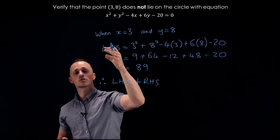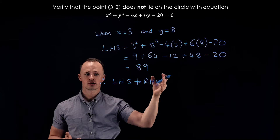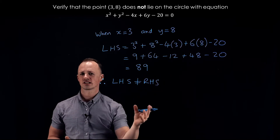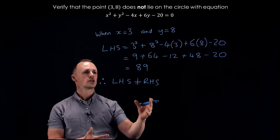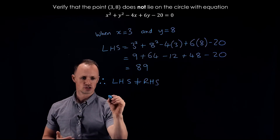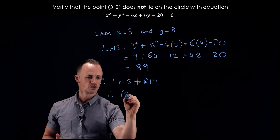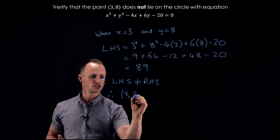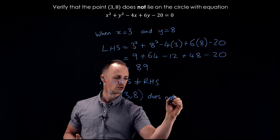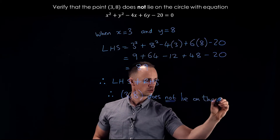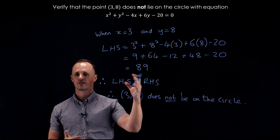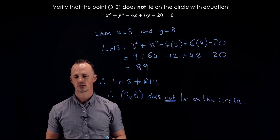Therefore the left hand side does not equal the right hand side, because the right hand side is zero. If we substitute a point into the circle equation and it gives us a left hand side that does not equal the right hand side, that shows the point is not on the circle. So (3, 8) does not lie on the circle, and that's all there is to verifying that a point is not on the circle.